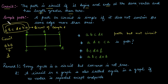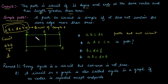A path or circuit is simple if it does not contain the same edge more than once. For the path a-b-c-d-e, we are moving from vertex a to e along distinct edges, so this is a simple path.